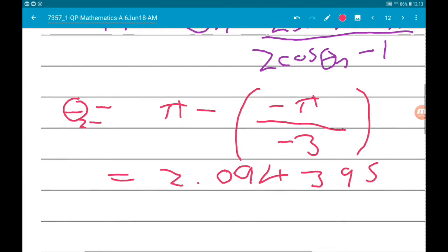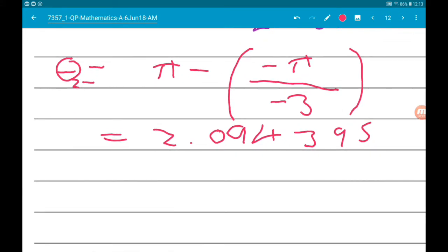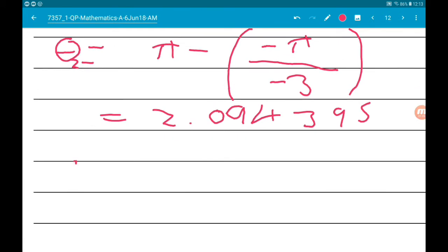Now to get our value for theta three, we put the value for theta two through Newton-Raphson and we should get to five decimal places 1.89549.